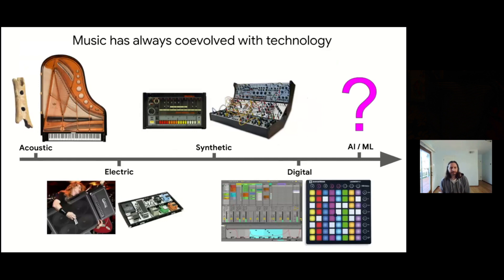We think of our work as part of a long continuum of how music has always co-evolved with technology — the way we express ourselves co-evolves with the tools we have. That goes from the earliest bone flutes, which are actually older than the oldest stone pottery, all the way through the piano, which allowed people to play in all 12 keys, the invention of electricity, digital effects, drum machines, and digital workstations. And now there's a new set of technology: machine learning and artificial intelligence.